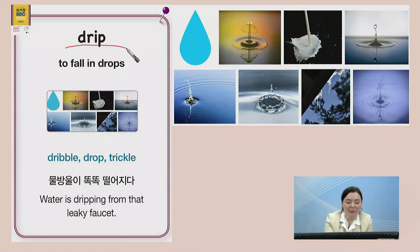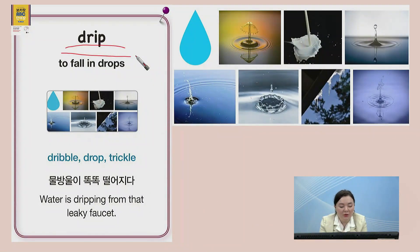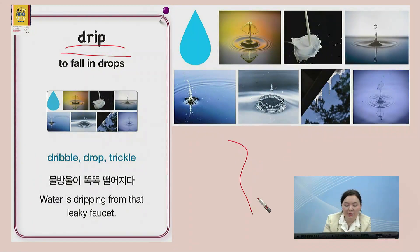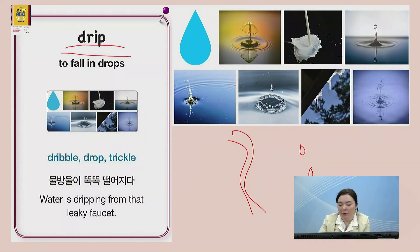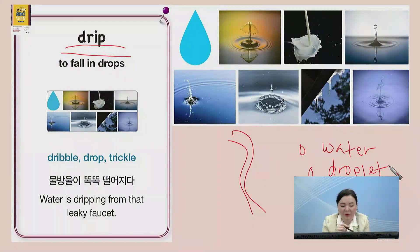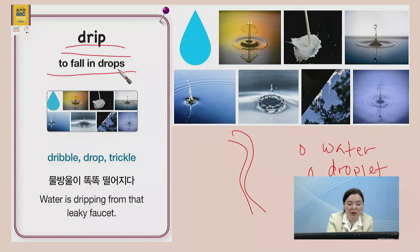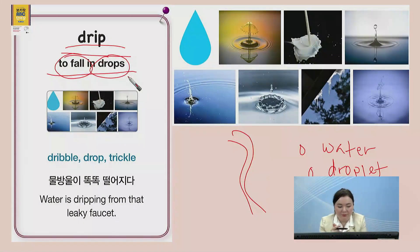The next word is 'drip.' 한국말로 설명하면, 물방울이 뚝뚝 떨어지다. So, it's not 흐리다 — 흐리다 would be to flow. To drip is just one water drop at a time. 영어로 설명하면, to fall in drops. 물방울이로 떨어지는 거예요. So, if we look at these images, we can see these icicles are melting and water is dripping from them.